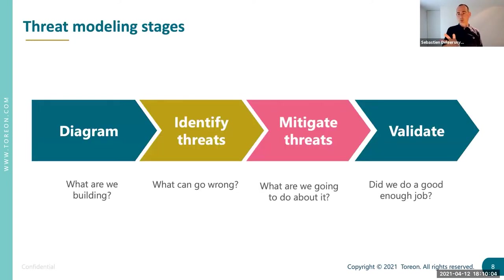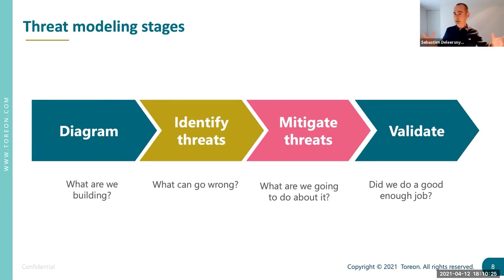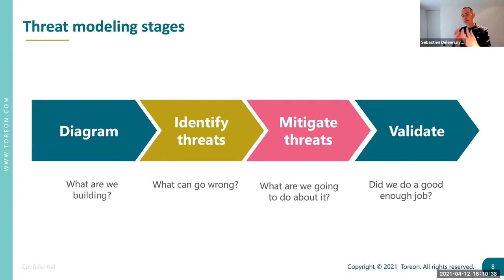How does threat modeling work? There are four stages. First, you have to understand what you are building as a team — you typically create diagrams to provide an abstraction of what you're building. Then in the second stage, typically done during a workshop — people together if possible, or remotely around a virtual whiteboard — you identify threats in a structural way, thinking about what can potentially go wrong to your system. There are different ways to do this: checklists, involving a cybersecurity specialist, or using STRIDE, which I'll explain.